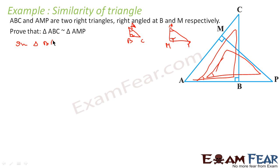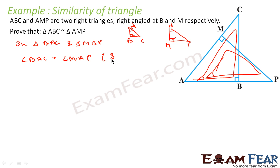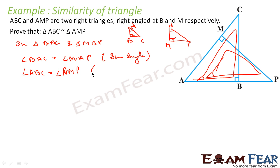Step: In triangle ABC and triangle AMP, angle A is equal to angle AMP — same angle, by construction. Also, angle ABC is equal to angle AMP, both are 90 degrees.